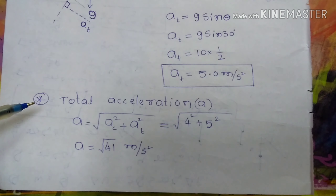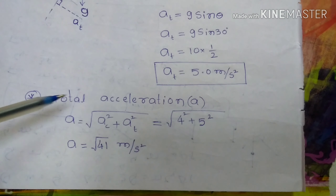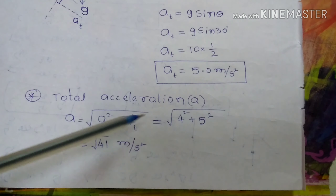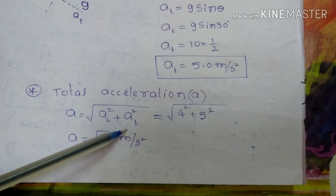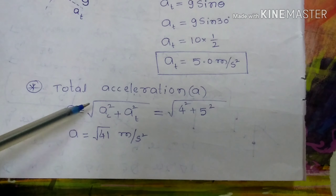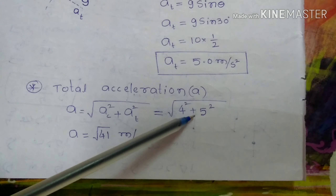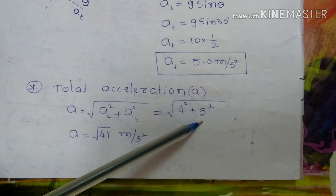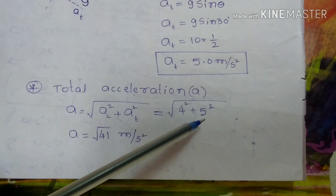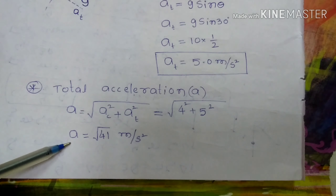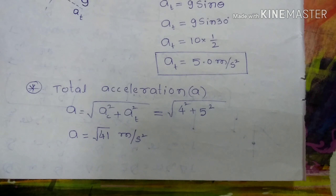For additional information, I will also calculate the total acceleration. Total acceleration A equals the square root of Ac-squared plus At-squared, because the angle between Ac and At is 90 degrees — just like the Pythagorean theorem. Substituting: Ac is 4, so 4-squared; At is 5, so 5-squared. Total acceleration A equals the square root of 16 plus 25, which is the square root of 41 meters per second squared.